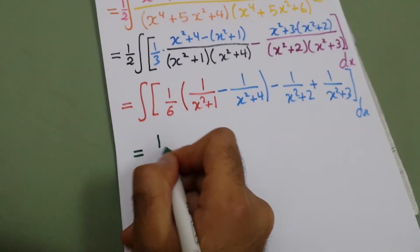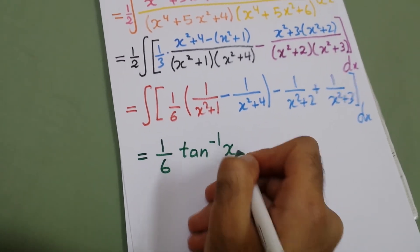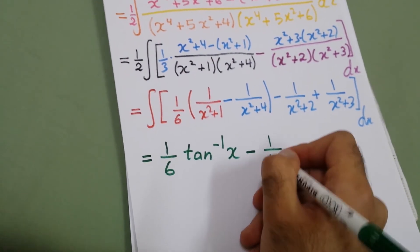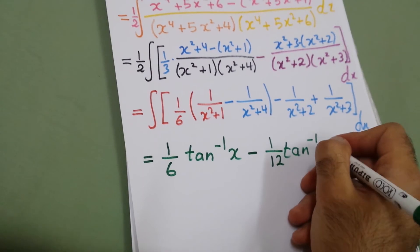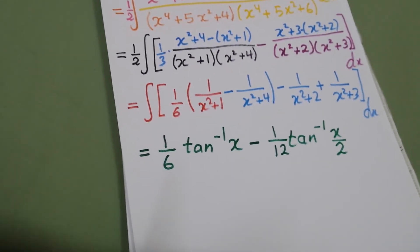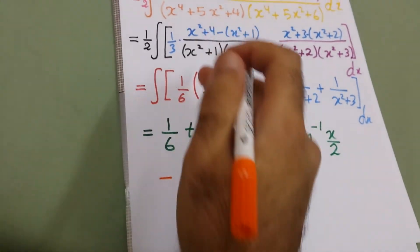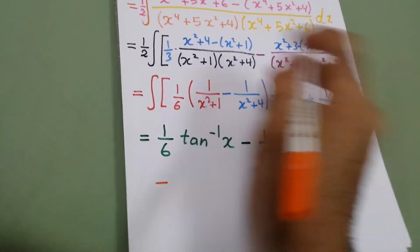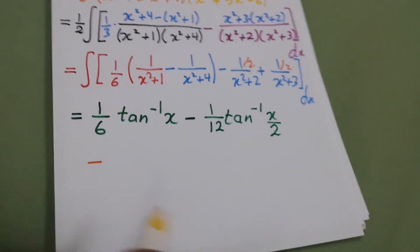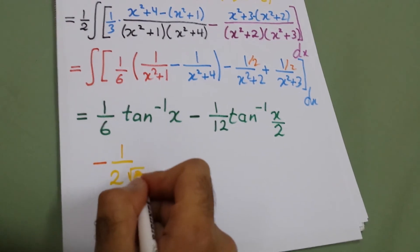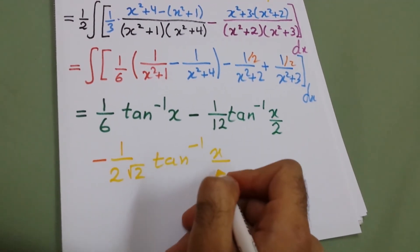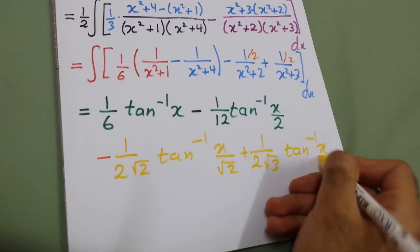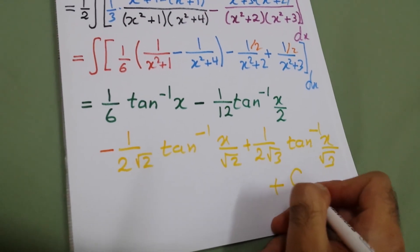Now everything is tan inverse. We get one-sixth times tan inverse of x, minus 1 over 12 times tan inverse of x over 2 (since the square root of 4 is 2), and we have a half here. So minus one over 2 root 2 times tan inverse of x over root 2, and plus 1 over 2 root 3 times tan inverse of x over root 3, plus constant. Thank you for your attention.